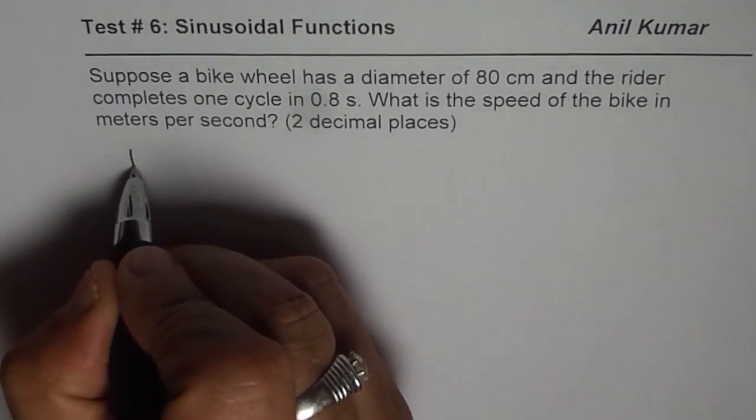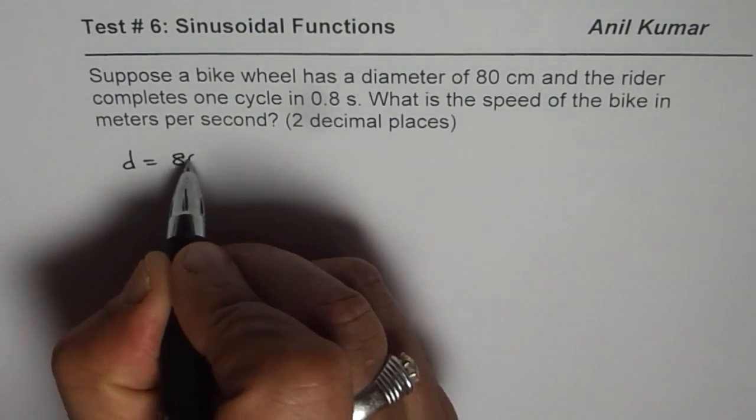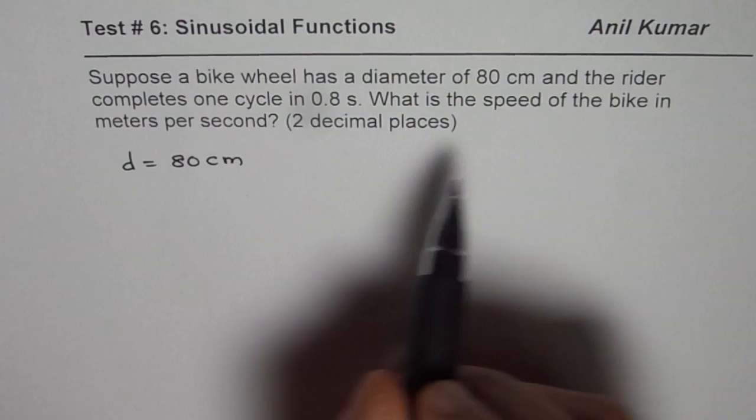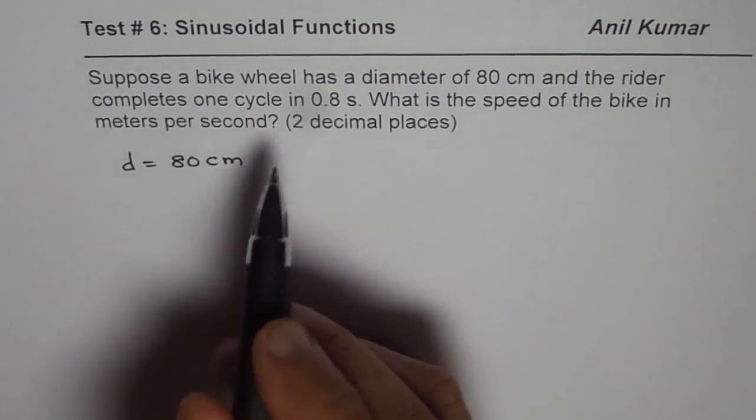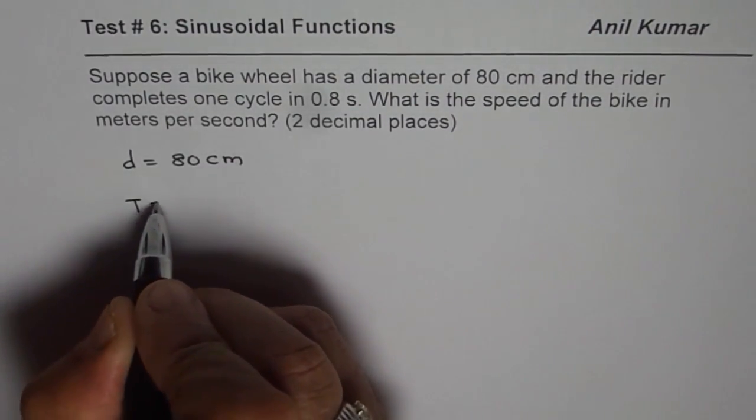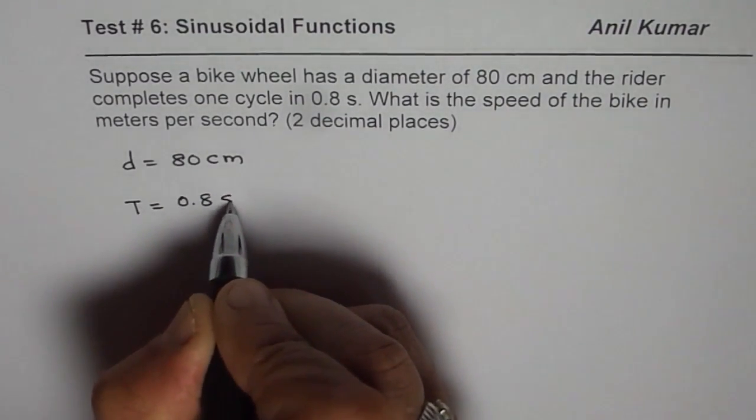What we are given here is diameter, so d = 80 cm, and time taken for one full cycle. The time period T is 0.8 seconds.